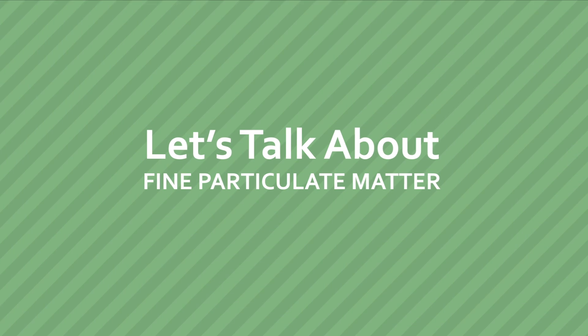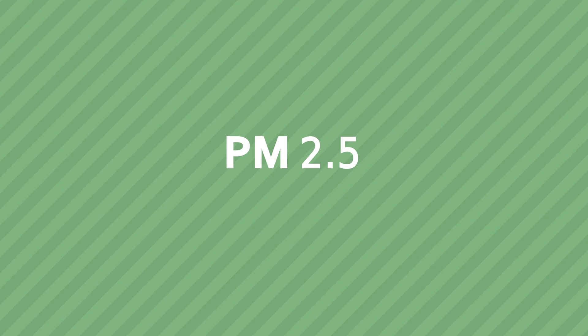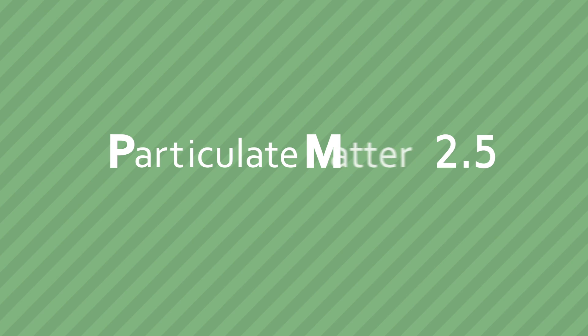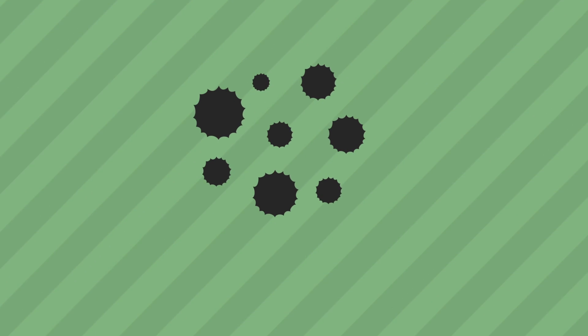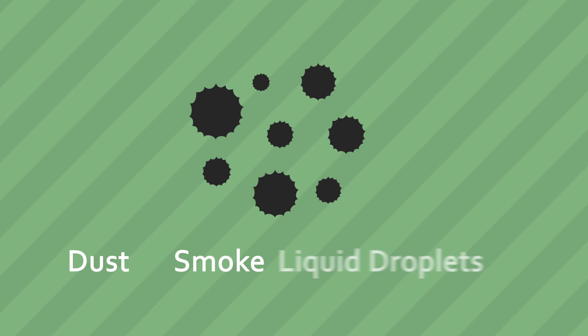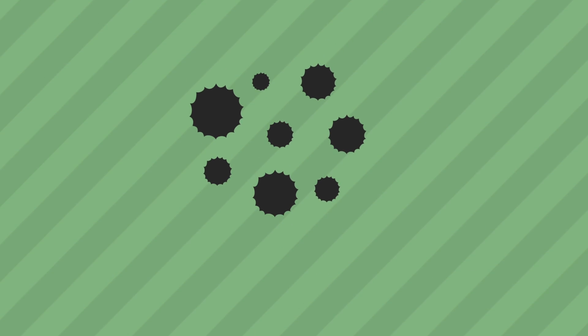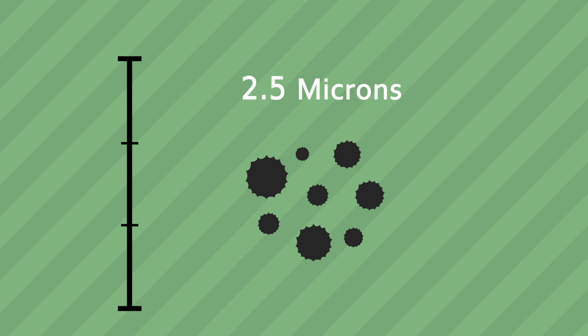Let's talk about fine particulate matter, also known as PM 2.5. PM stands for particulate matter, which are tiny particles that can be suspended in the air, such as dust, smoke, and liquid droplets. 2.5 refers to the size of that particle.